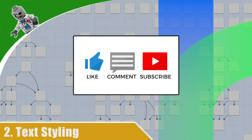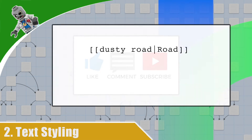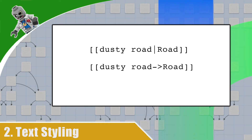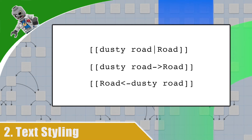In the last video, I showed you how to link passages using the pipe character. You also have another option: you can use an arrow symbol. This works the same way as the pipe, but it clearly shows the relationship between the text and the passage that you're linking to. You can read it like this: the dusty road text goes to the road passage. This is great for languages written left to right, but for languages written right to left, such as Hebrew, you can simply flip it. The dusty road text still links to the road passage — it's just formatted in a way that makes it easier to read for right-to-left languages.